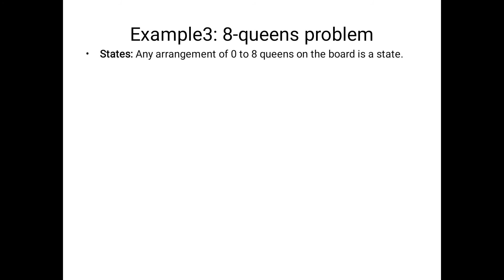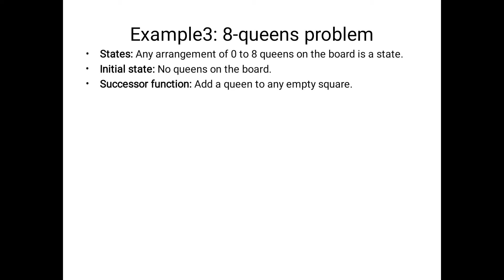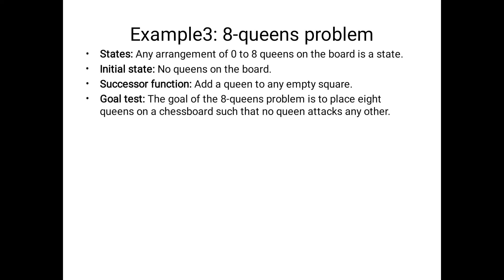Now we move to the eight queens problem. We will consider an eight-by-eight board. Any arrangement of zero to eight queens on the board is a state, starting with an empty board. The goal of the eight queens problem is to place eight queens on the chess board such that no queen attacks any other — that is the condition.